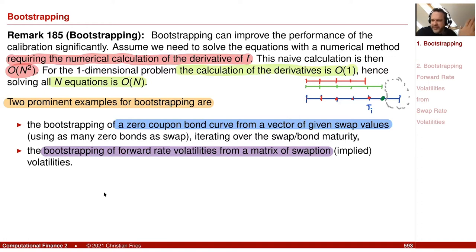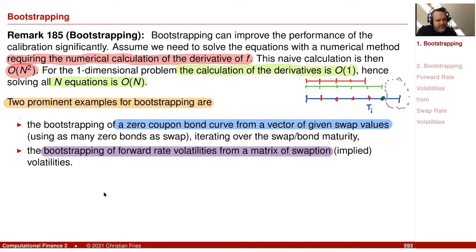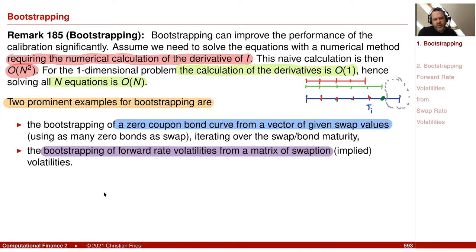This can be a big difference. For example, with maturities of 1, 2, 3, ..., 20 years, you can easily have a 20×20 options matrix — roughly 200 different values to match, and maybe 100 parameters. That is a factor of 100 difference in performance. Doing a bootstrap solution versus brute-force using an n-dimensional optimizer can be a huge factor.